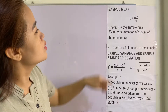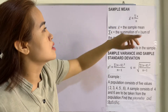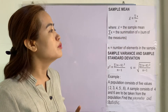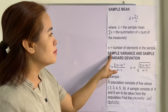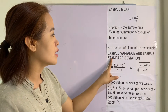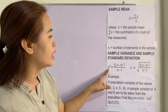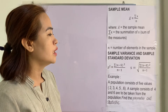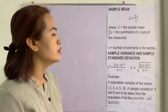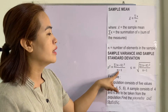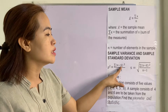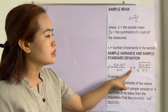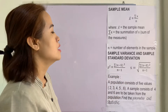For the sample mean, we use the formula x-bar equals summation of x divided by n, where n is the number of samples. For the sample variance and sample standard deviation, the formula is: s squared equals summation of (x minus x-bar) squared divided by n minus 1. The x-bar is our sample mean, and to get the standard deviation you take the square root.